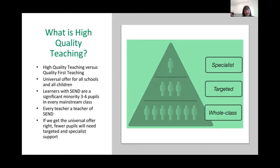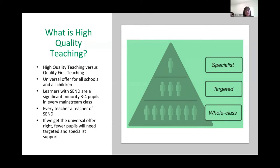Our ambition is to help people meet the needs of every child in their class, recognizing that learners with SEND are a significant minority — three to four children in every mainstream class. So every teacher is a teacher of SEND. We're really passionate about supporting people around the country, not just in Lincoln and West Yorkshire where we're based. If we can get the universal offer right, we can really start to meet need and make sure our minimal resources for targeted and specialist support are focused on the right children.